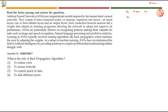Question: what is the role of the back propagation algorithm? Options are: to reduce error, to secure network, to control speed of data, to add different layers. Layers are already added, there is nothing to do with speed of data, and nobody is going to secure this network. The only meaningful option is to reduce error — option number 1 is the right answer. The passage says training algorithms like back propagation minimize the error by adjusting the weights.